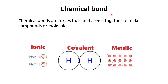So what is a chemical bond? Chemical bonds are forces that hold atoms together to make compounds or molecules. In chapter 1, we covered what is an atom, what are compounds, and what are molecules. Atoms basically combine together to form compounds and molecules. The force or attraction that keeps atoms together is called a chemical bond. Chemical bonds are basically of three types: ionic, covalent, and metallic.